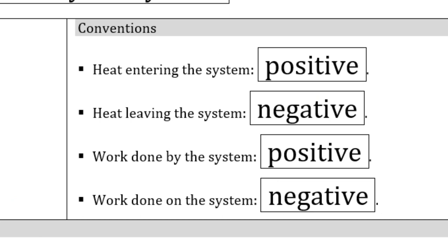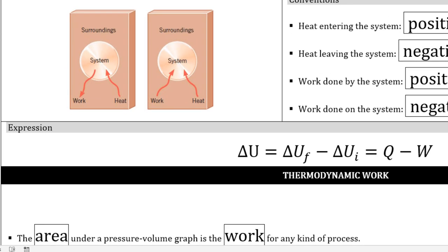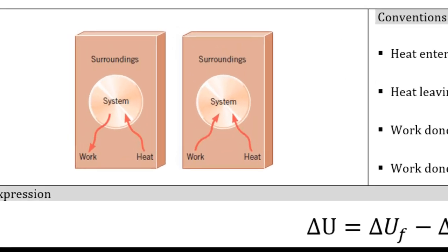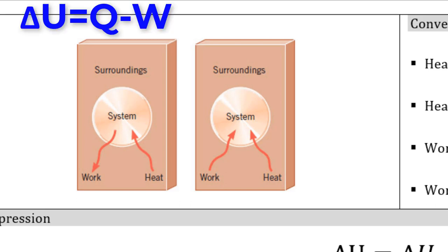We have to be really careful about how to designate positive work versus negative work, and positive heat versus negative heat. If heat flows into the system, we count it as positive. If heat flows out of the system, it gets counted as negative. Work done by the system is considered positive, and work done on the system is negative. The first law expression says the change in internal energy depends on the amount of heat flowing in or out of the system and the amount of work done on or by the system. Looking at the left box: heat flows in, so internal energy tends to increase, but the system doing work on the surroundings decreases internal energy.